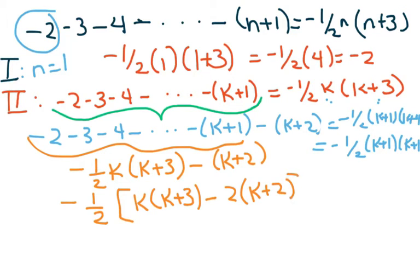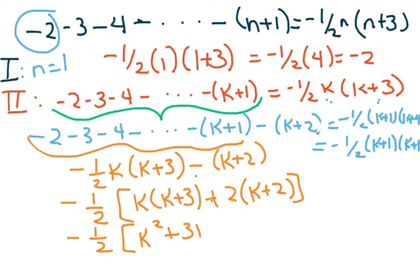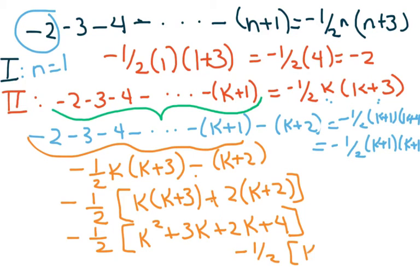The negative times positive is negative, so we have negative one-half times (k squared plus three k plus two k plus four), which simplifies to negative one-half times (k squared plus five k plus four).